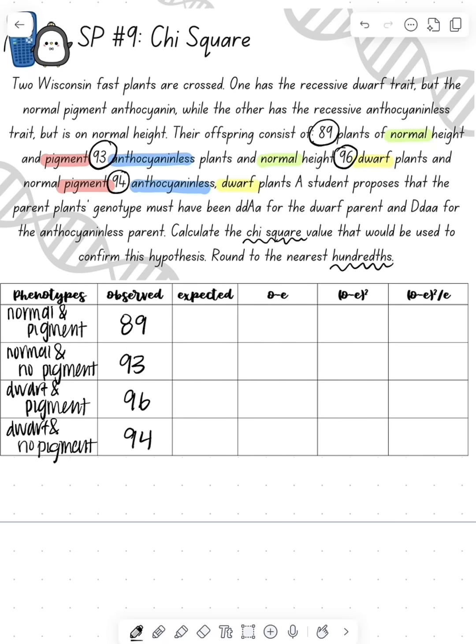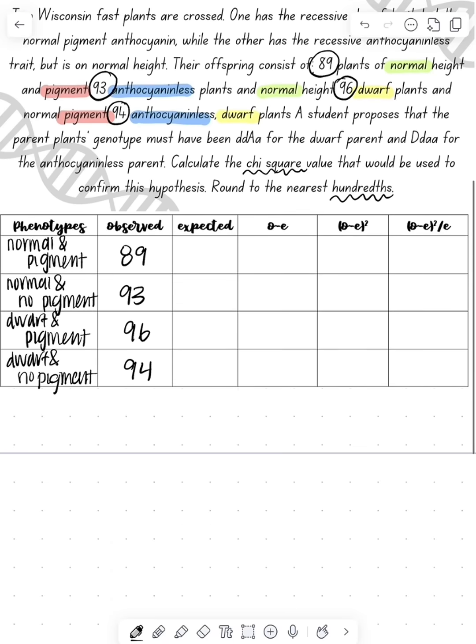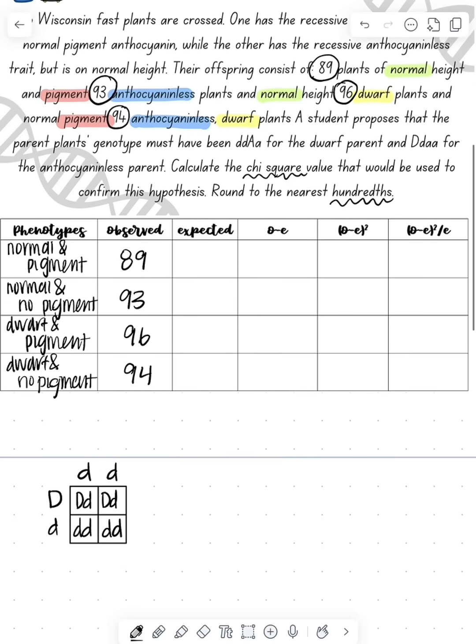So now we need to do a Punnett square to see if the parents that we believe the genotypes are, are actually those genotypes. So go ahead and set up your Punnett square and you're going to put homozygous recessive on one side and heterozygous on the other for one trait. And you're going to find that one half of them are going to be normal height and one half will be dwarf. So let's color code that similar how we had it above.